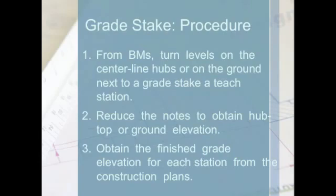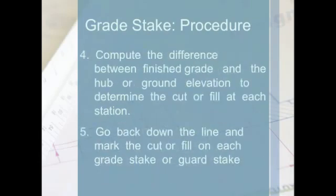Elevations are usually determined by an engineer's level and level rod. One procedure for setting grade stakes is as follows. First, from benchmarks, turn levels on the centerline hubs or the ground next to the grade stake at each station. Second, reduce the notes to obtain hub, top, or ground elevation. Third, obtain the finish grade elevation for each station from the construction plans. Step four, compute the difference between finish grade and the hub or ground elevation to determine the cut or fill at each station. Step five, go back down the line and mark the cut or fill on each grade stake or guard stake.